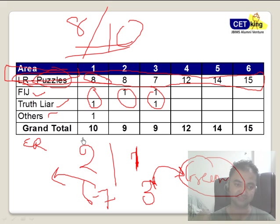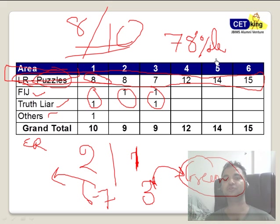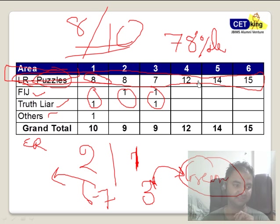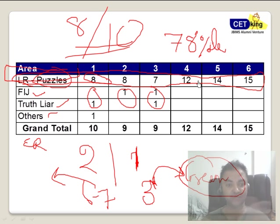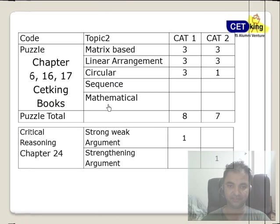One more thing, especially for engineers: if you are banking heavily on this section — as I used to do when preparing for MBA, trying to score 100% marks here rather than concentrating on verbal — if you score 100% marks in this area, you will only reach 78 percentile. So for those scoring 50-60 percentile, yes, LR gives you a gain up to 78-80 percentile. But if you're targeting 99 percentile, you have to make a mark in verbal as well.